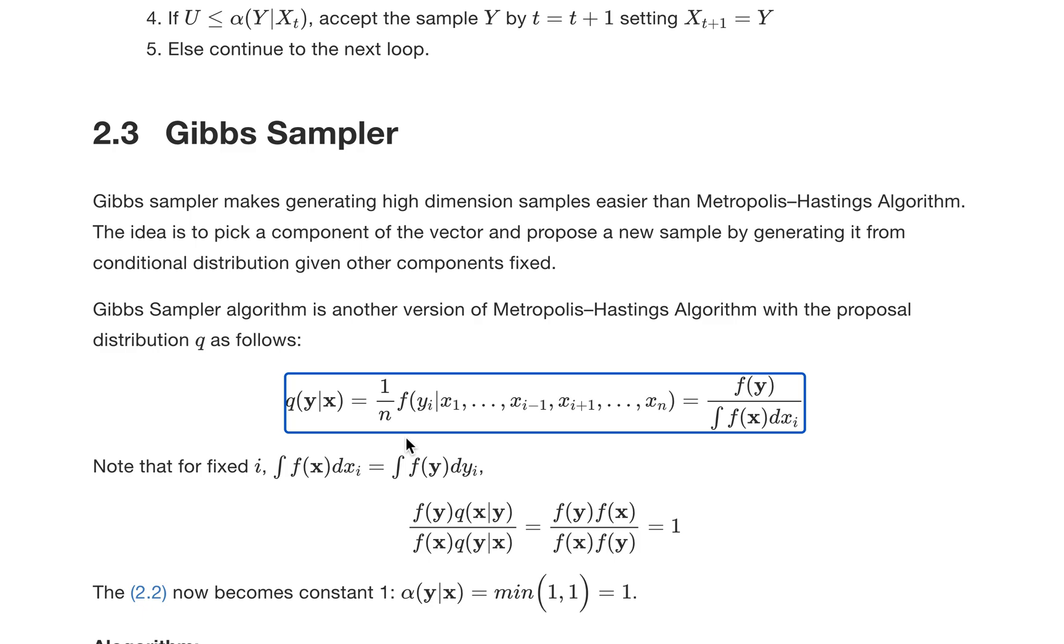And then we're going to generate a sample for that specific component, let's say yi, a new sample. So that's a two-step probability. In the independent steps we're going to multiply these two probabilities—that's our proposed probability q for Gibbs Sampler.